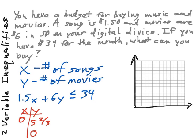Now if y was 0, we have 1.5x is less than or equal to 34, and solving that we get 22 and 2/3. So the maximum that we can buy is 22 and 2/3 of a song or 5 and 2/3 of a movie, but what that means is that we're buying only one type of media or only the other. So let's go through and graph this and see where we end up in our grid system.